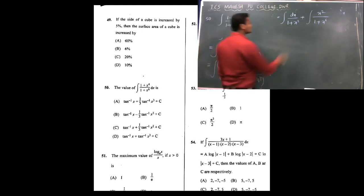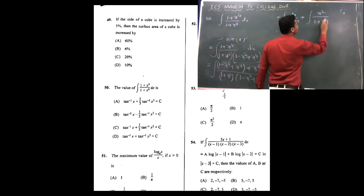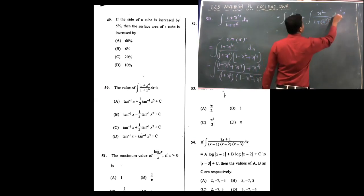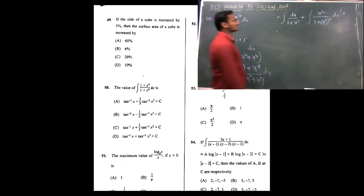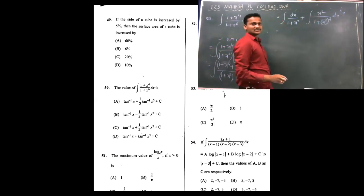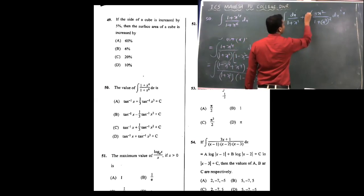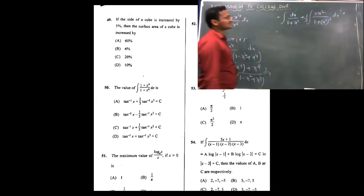So x⁶ can be rewritten as x³ raised to 2. It can be rewritten as x³ raised to 2, because x³ raised to 2 gives 3x². So let us rearrange this term, multiplied and divided by 3. Now it is of the form f'(x) upon f(x).